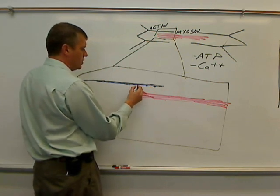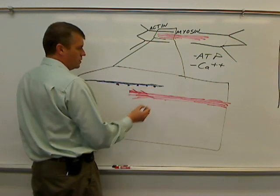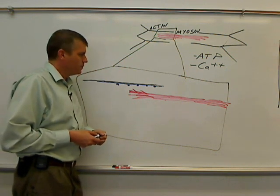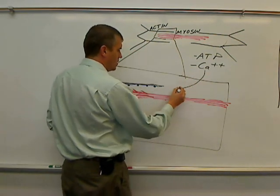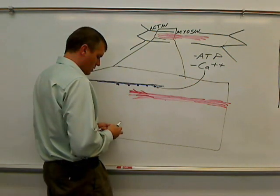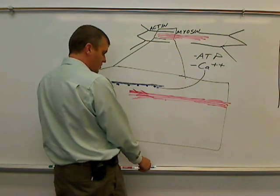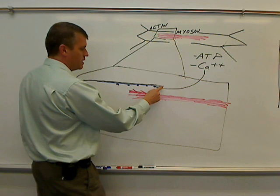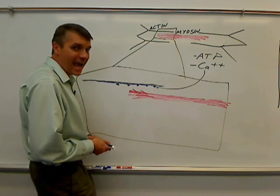It's called troponin-tropomyosin complex. The little purple circles I'm drawing are the troponin, and the blue line is the tropomyosin. I hope you can see that. Calcium comes in, and it binds to the tropomyosin. When the calcium binds to the tropomyosin, it causes a shape change. And ultimately what the tropomyosin does is it moves troponin off of the myosin binding sites on actin.